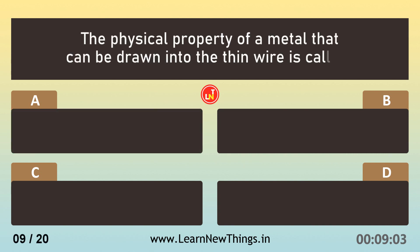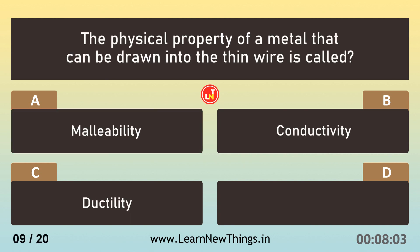The physical property of a metal that can be drawn into a thin wire is called Ductility.